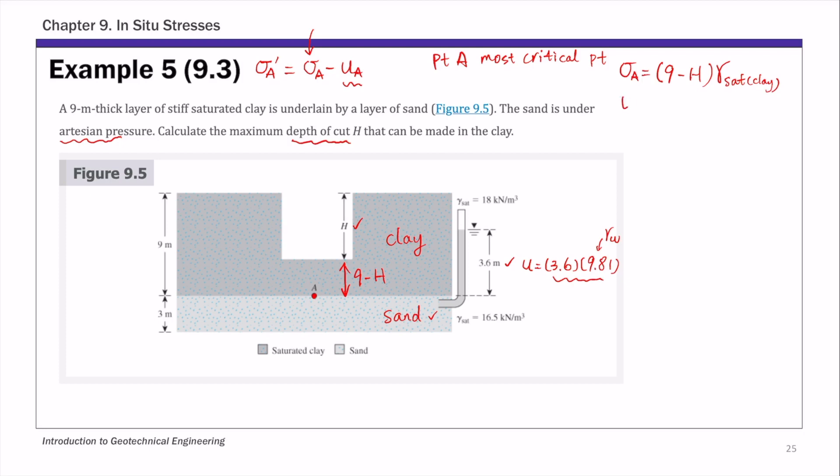And then the pore pressure is basically just 3.6 times unit weight of water. When you excavate such that the effective stress at point A becomes zero, that's basically the maximum depth of cut H that you can make. So this is sigma A minus U A.